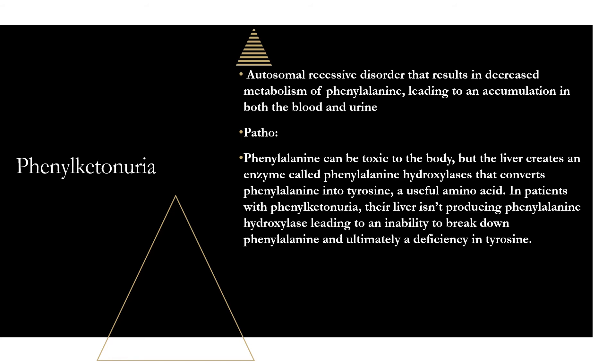In a normal patient, the liver creates an enzyme called phenylalanine hydroxylase, which converts toxic phenylalanine into the useful amino acid tyrosine. Tyrosine is essential for protein building and neurotransmitter production — it helps make epinephrine, norepinephrine, and dopamine. In patients with phenylketonuria, the liver isn't producing phenylalanine hydroxylase, so instead of getting tyrosine, these patients are stuck with harmful accumulated phenylalanine.